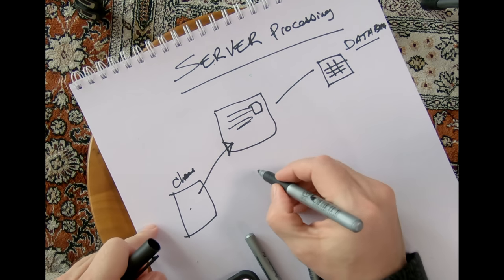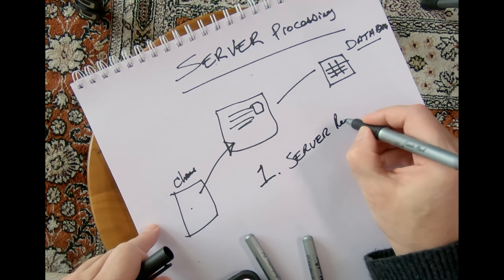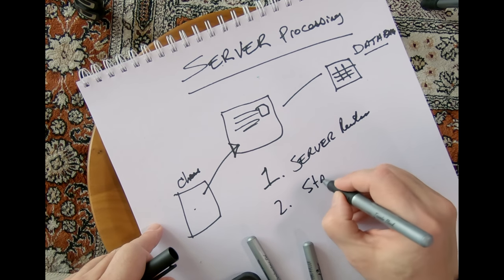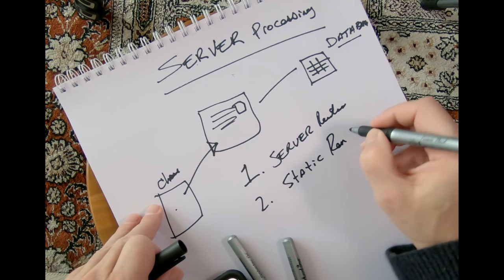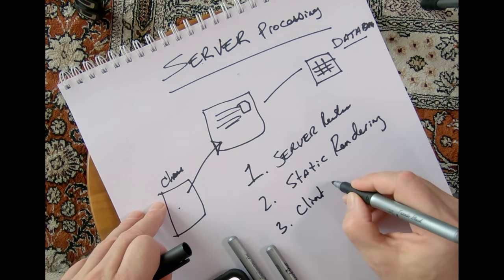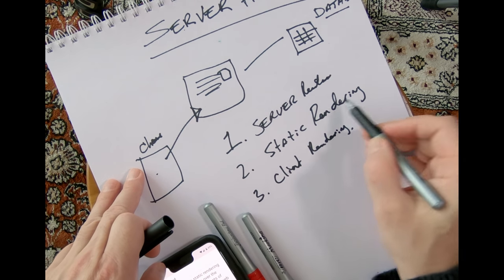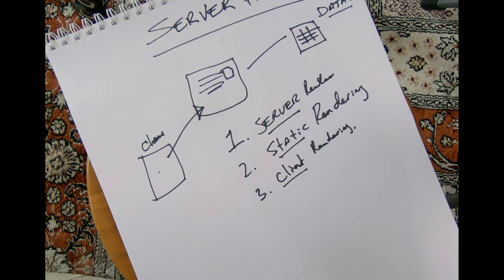There are three styles. Number one is what they call server rendering. Two, they call static rendering. And three, they call client rendering. These are three different strategies you can utilize to generate web apps — the pages in a web app — no matter what site. Server rendering is the most common type of rendering.